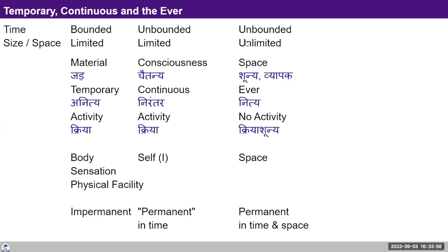A participant raises that in certain practices, affirmations are given that we are part of limitless energy and infinity, suggesting the self should be unlimited. The response: we keep using certain phrases but must understand their meaning. You have the potential and the energy to think — it doesn't mean your existence has shifted somewhere else. Having potential doesn't mean the self is unlimited in space.